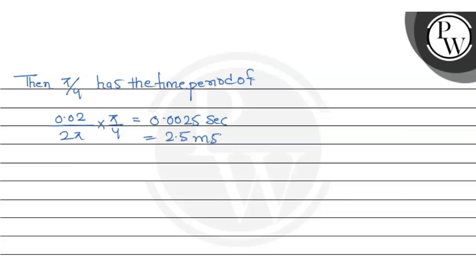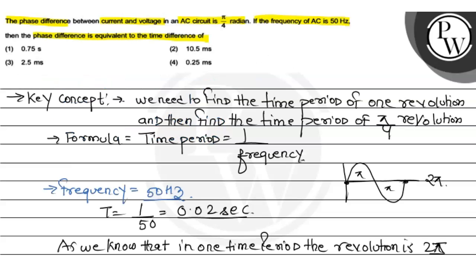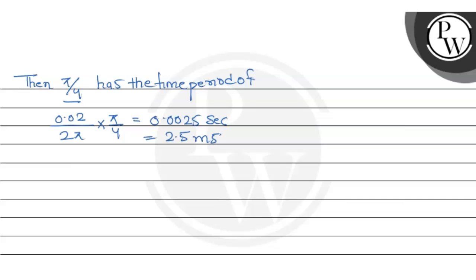So this is the basic concept to use. If you have a particular phase difference and you want the time period, then you need to divide the time period by 2π and multiply by the phase difference in radians. Checking the options: first option incorrect, second option incorrect, third option is the correct option, fourth is also incorrect. So the correct option is C, which is 2.5 ms. I hope you understood well.